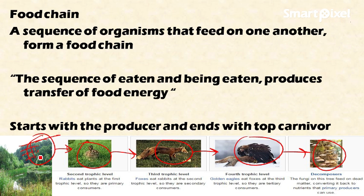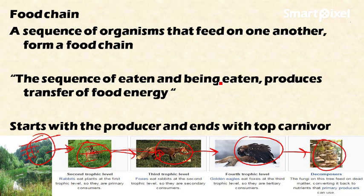This sequence of eating and being eaten is a food chain, and it transfers energy from one trophic level to another. For example, the energy stored in these plants is transferred to the rabbit; the energy stored in the rabbit is transferred to the fox; and the energy stored in the fox is transferred to the golden eagle.